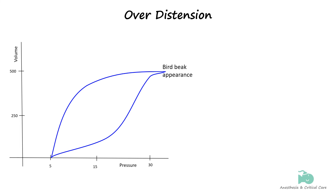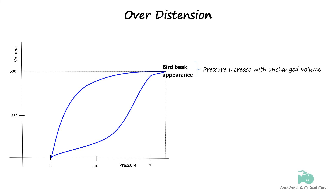Lung over-distension on a pressure-volume loop manifests as a flattening of the loop at high lung volumes, forming a shape that resembles a bird's beak. This occurs because pressure begins to significantly rise with no change in volume. The excessive pressure can lead to potential lung damage as the high pressures stretch the lung tissue beyond its safe limits. Reducing the tidal volume delivered can correct this issue of over-distension.